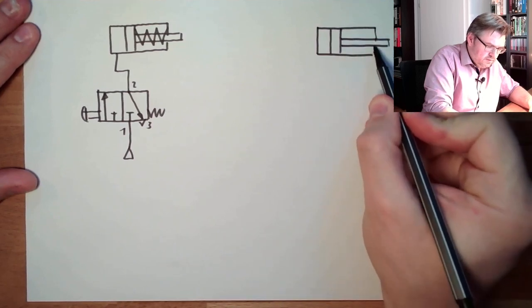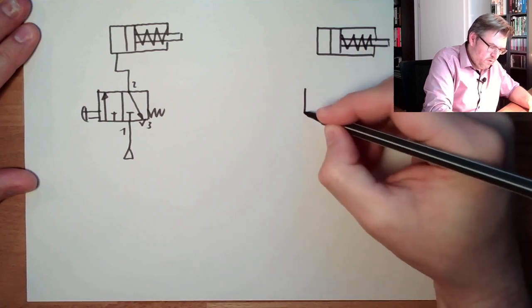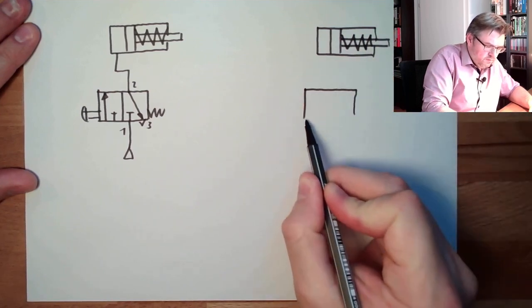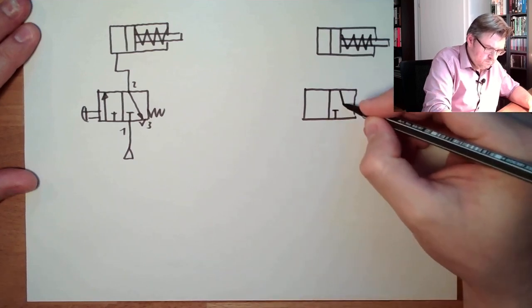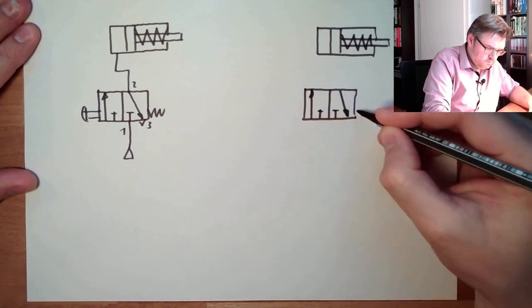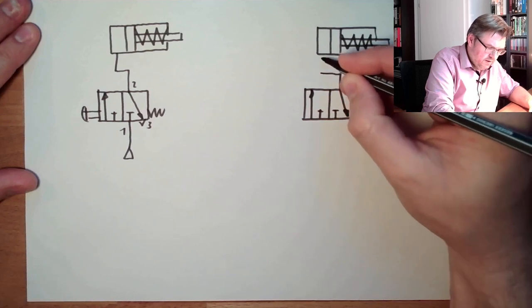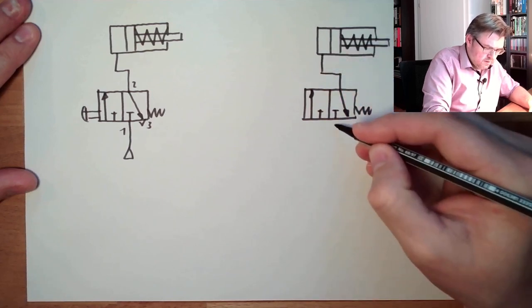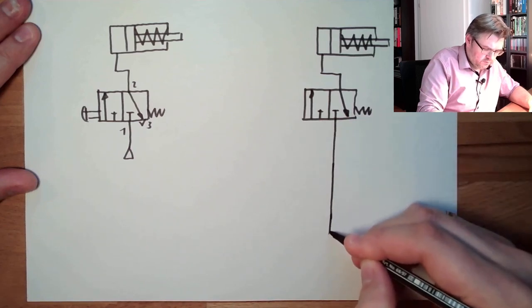So again we have a single acting cylinder. Again we have here the three-two way valve. Again it's spring loaded, again we are filling it, and again here is the pressure source.